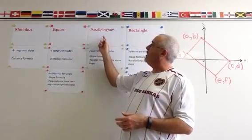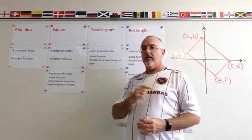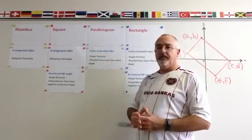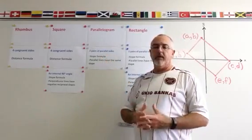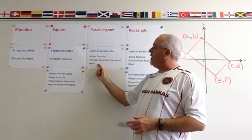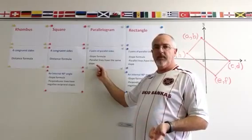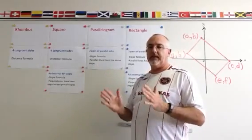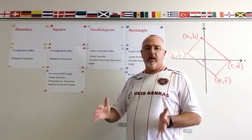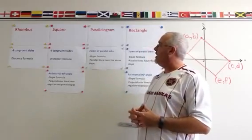If we are asked to prove that we have a parallelogram, all we have to prove, given a quadrilateral, is that it has two pairs of parallel sides. We do that by doing the slope formula — this time we do the slope formula four times. We also have to say that we know that parallel lines have the same slope. So we are proving that two of the sides have the same slope, therefore they are parallel, and the other two sides also have the same slope as each other, and therefore they are parallel. At that point, we have proven we have a parallelogram.